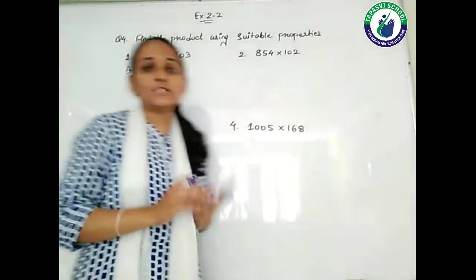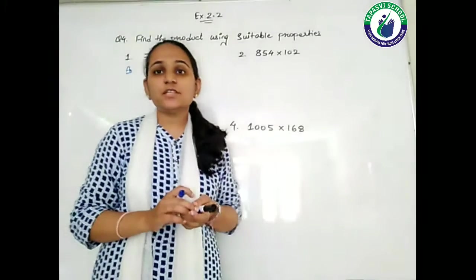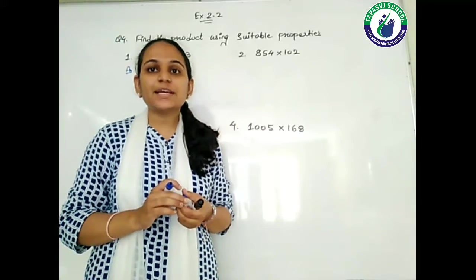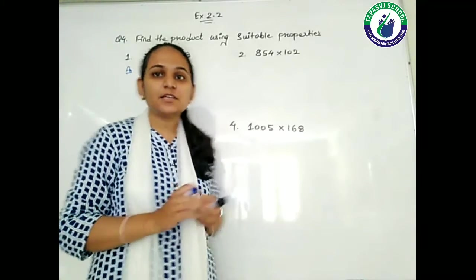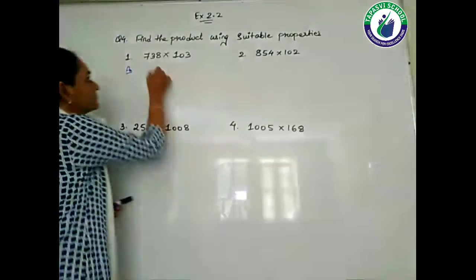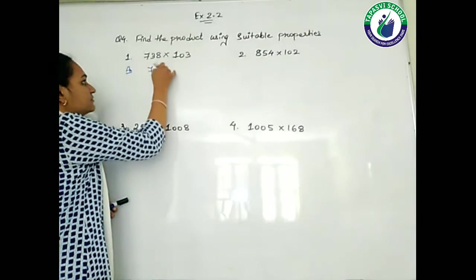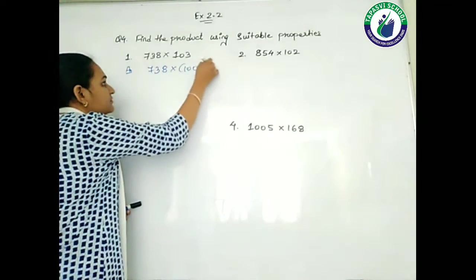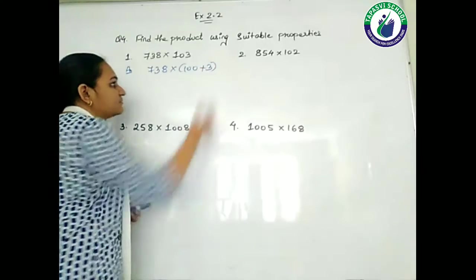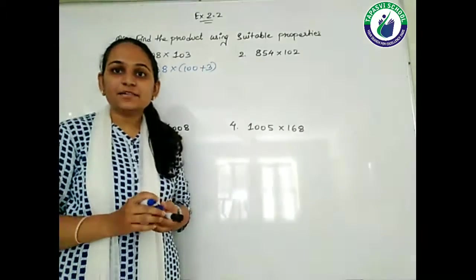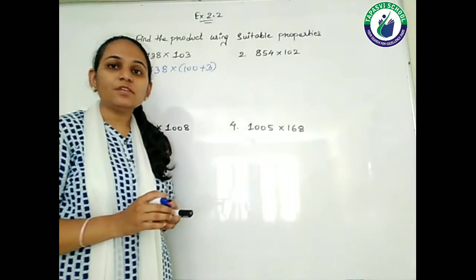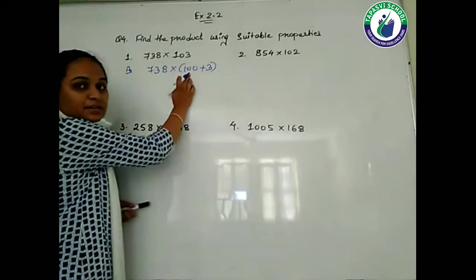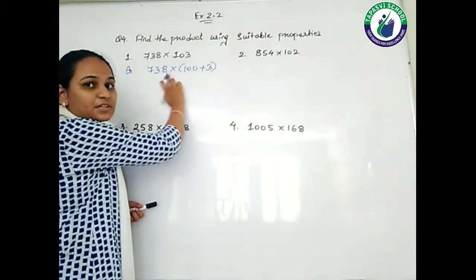Can I write 103 as 100 plus 3? Yes, we can write 103 as 100 plus 3. Now what can we do? We can multiply 738 with 100 and 738 with 3.